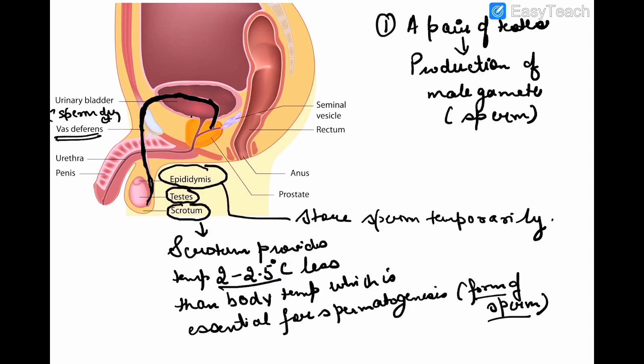The male reproductive system consists of a pair of testes. The main function of testes is production of the male gamete, that is sperm.